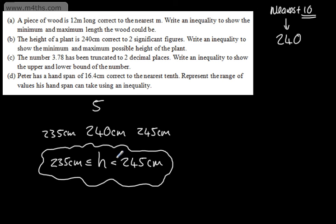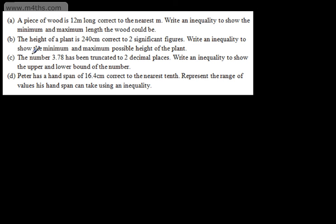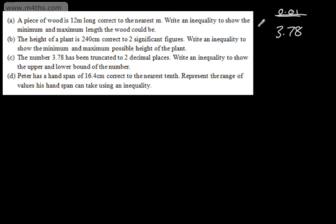Nice and logical, nice and straightforward. If you've already done work with upper and lower bounds, this should be fairly straightforward. Question C: the number 3.78 has been truncated to two decimal places — essentially cut off or rounded to two decimal places. We're asked to write an inequality to show the upper and lower bound of the number. This has been rounded to the second decimal place, so that is to the nearest 0.01. We need to halve this particular quantity.